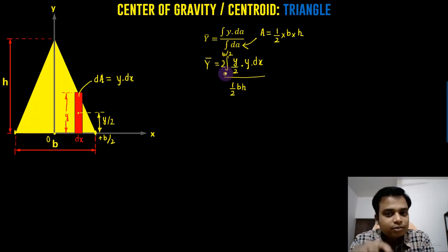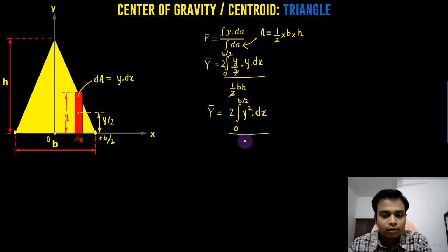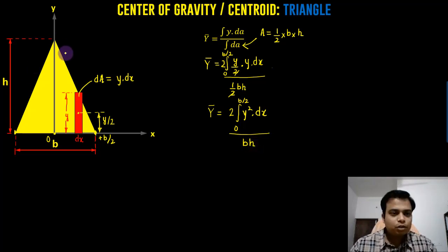The next thing to do is to simplify this further. This can be done very easily. This is going to be equal to, let me write this, y bar again can be written as, this 2 and 2 will cancel out. Obviously, so 2 times of integral, 0 to b over 2 and this is going to be y square dot dx, whole divided by bh, done and dusted.